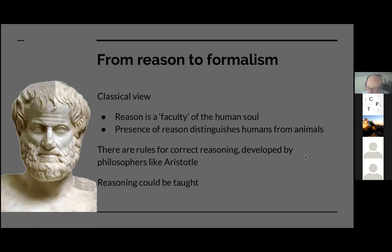Now, the classical view saw reasoning as a faculty, something that humans could do, or that the human psyche or soul could do. It was the presence of reason in humans that distinguished us from animals. And there were recognized to be rules for correct reasoning, and Aristotle is the most obvious person who laid these down. It was held that reasoning was something that could be taught. So reasoning was seen as something inseparable from the nature of humans and something which distinguished humans from everything else, though it was hypothesized that the gods might reason as well.